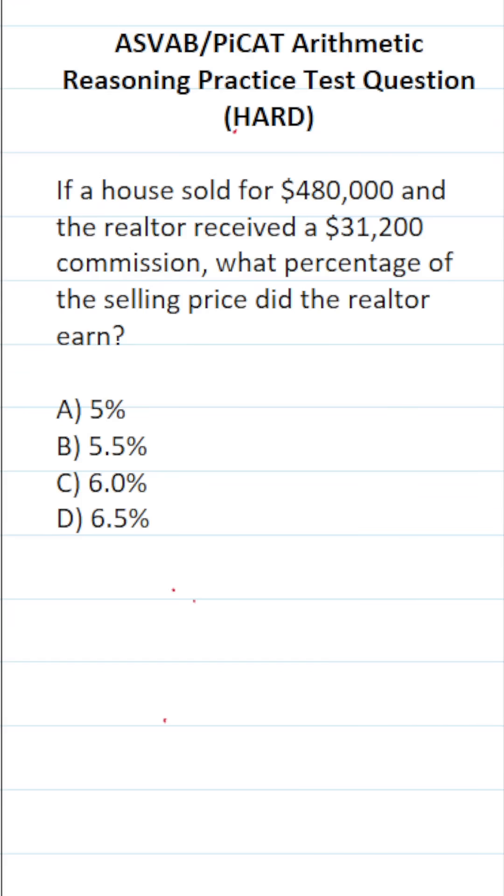This arithmetic reasoning practice test question for the ASVAB and PiCAT says, if a house sold for $480,000 and the realtor received a $31,200 commission, what percentage of the selling price did the realtor earn?